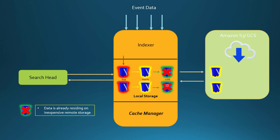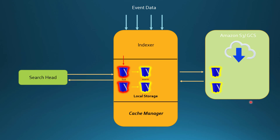In Splunk Smart Store there is no concept of a cold bucket — although it could exist if you are migrating from a non-Smart Store enabled index to a Smart Store enabled index where some cold buckets already exist. But in normal cases, if you are starting with a Smart Store enabled index, no cold bucket will be created. There is only the hot bucket and the warm bucket, and from the warm bucket data goes directly to the remote storage. Instead of a cold bucket, Smart Store maintains a metadata file containing all necessary information about the warm buckets in remote storage.